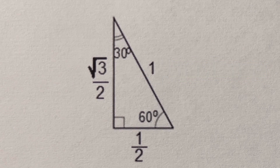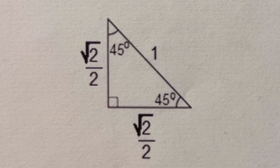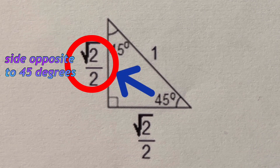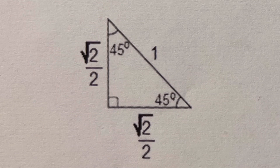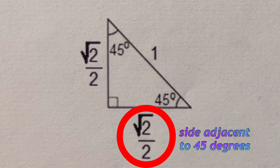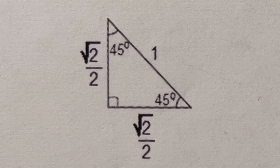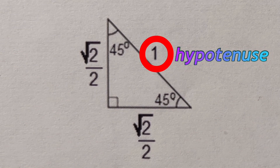Now let's go over the 45-45-90 degree triangle. We remember that the side opposite to 45 degrees is √2/2, and the side adjacent to 45 degrees is √2/2. This works for both angles since they are both 45 degrees. The hypotenuse is 1.